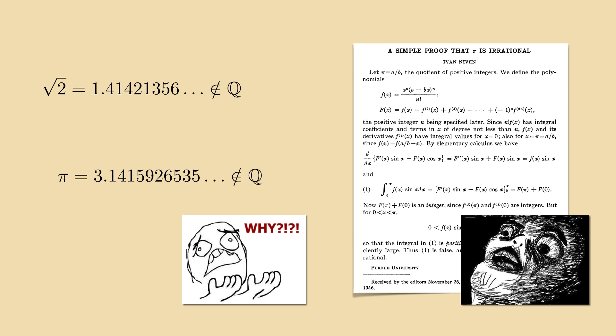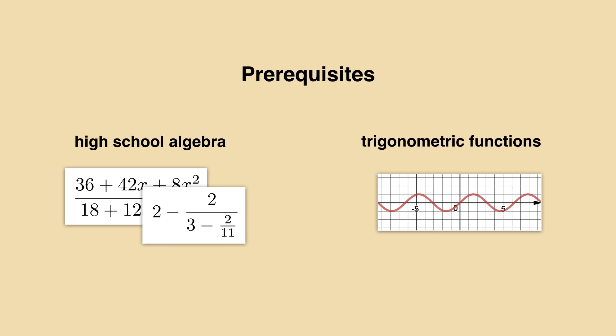This series of videos wants to give an answer to that. An elementary proof that pi is irrational. We will use high school-level algebra and trigonometric functions, where angles are measured in radians, not degrees. Calculus will not be required.